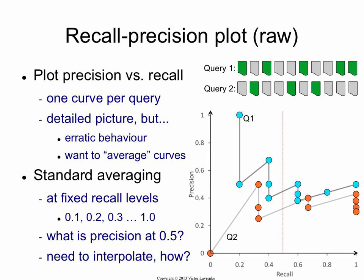The next natural question is: you don't run experiments on one query — you typically run them on a lot of queries. So if you do this on 50 queries, you'll end up with 50 curves, and 50 curves are a mess to look at. What you want to do is average them in some way to construct a single curve that represents average performance over many queries, because each query has its own biases.